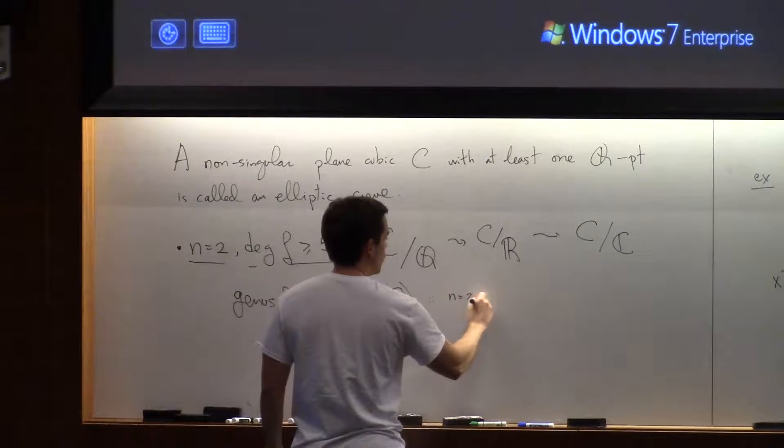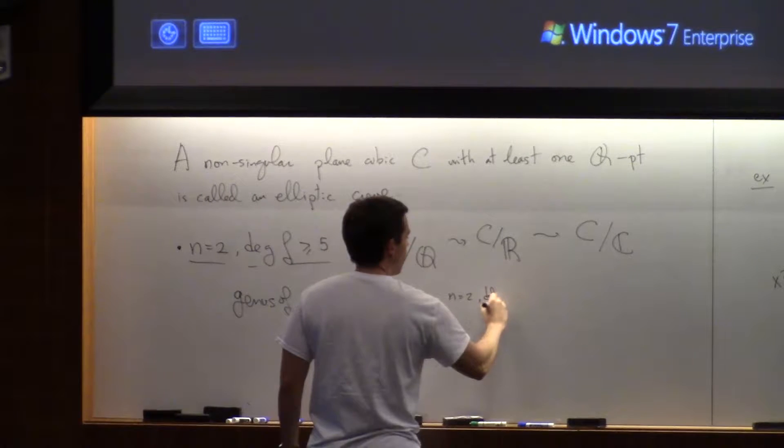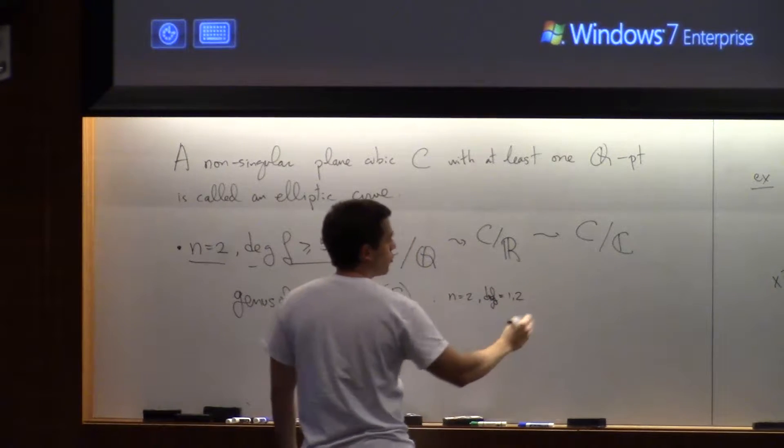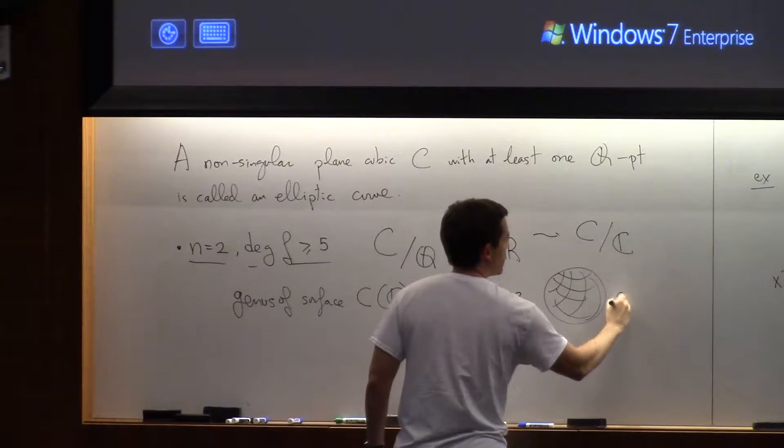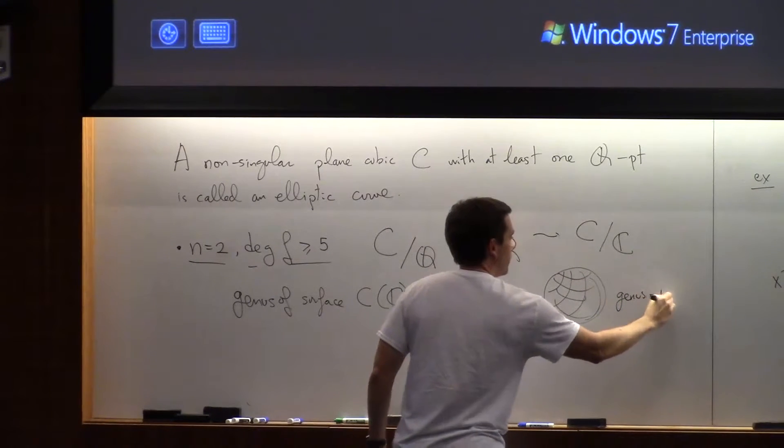When n is 2 and the degree of f is 1, 2, you get spheres, okay, and the genus is 1.